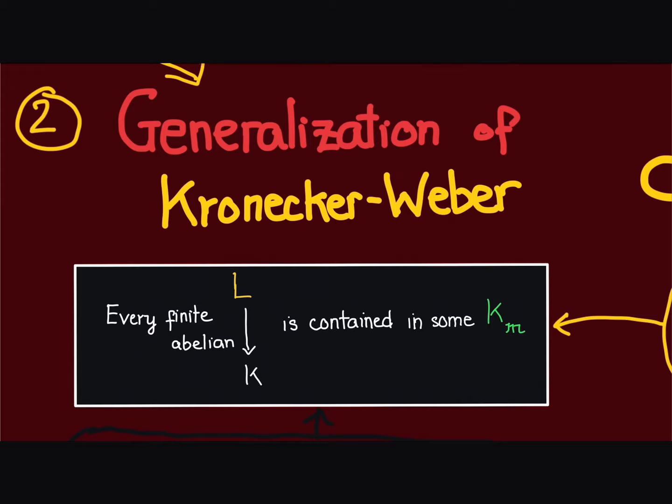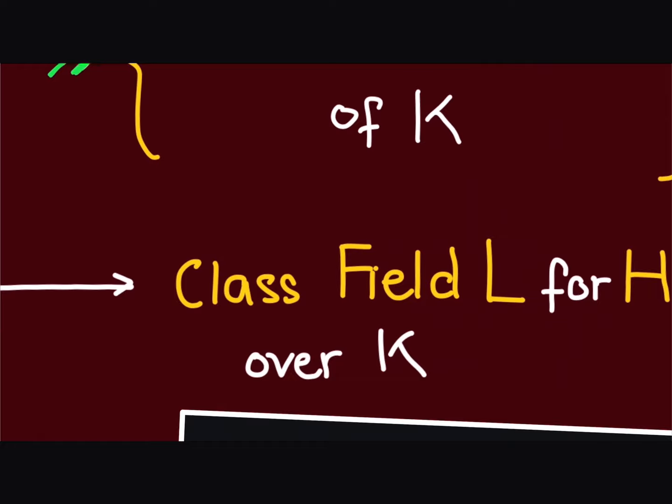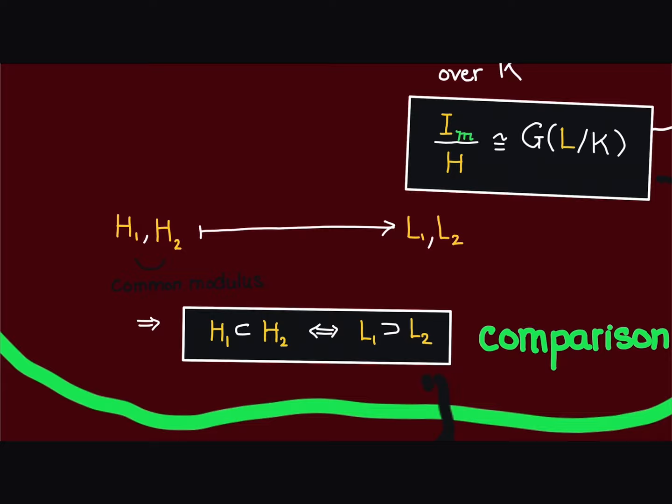Let's see why that is. This comes from Takagi's theorem. Recall that Takagi's theorem says every finite abelian extension of k is the class field for some ideal group of k. Let h be the ideal group corresponding to l.